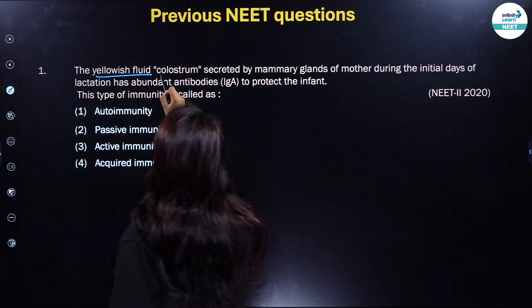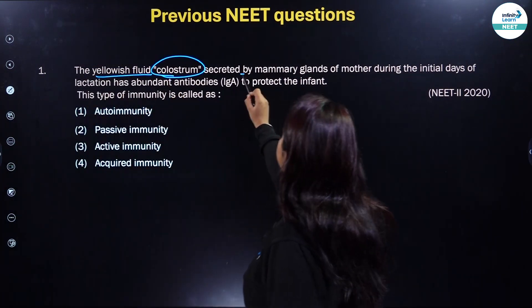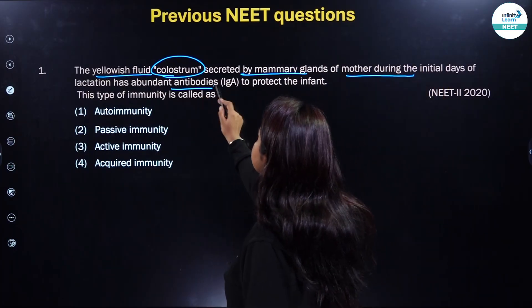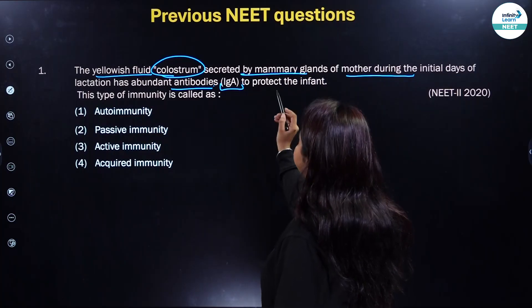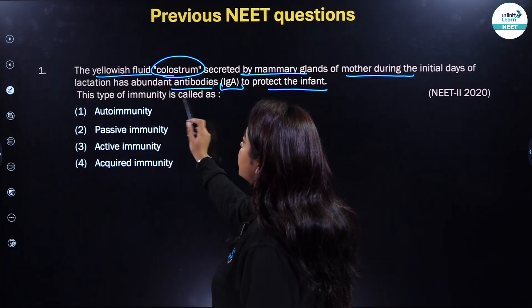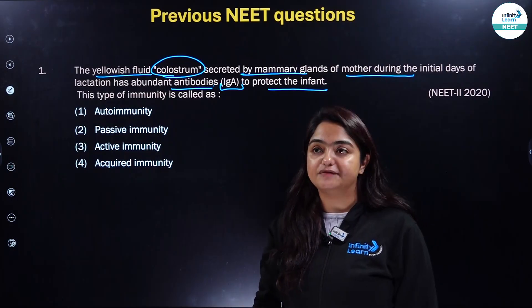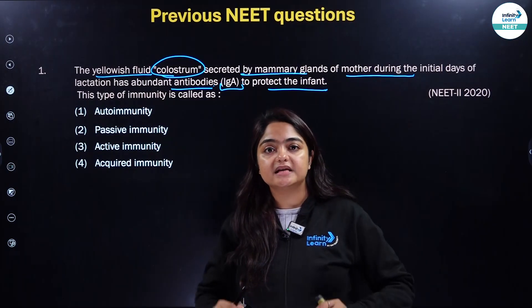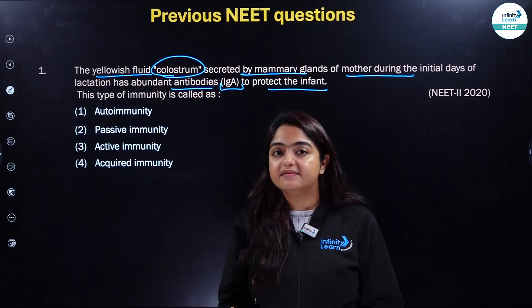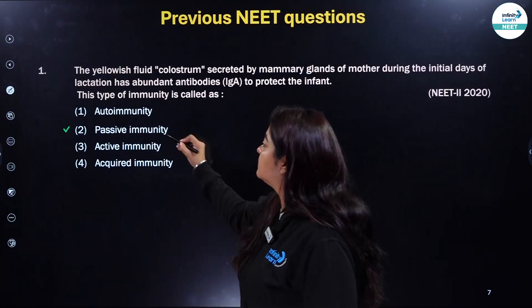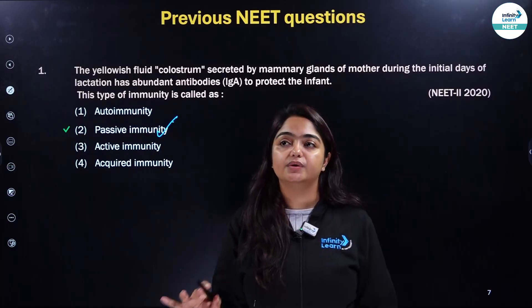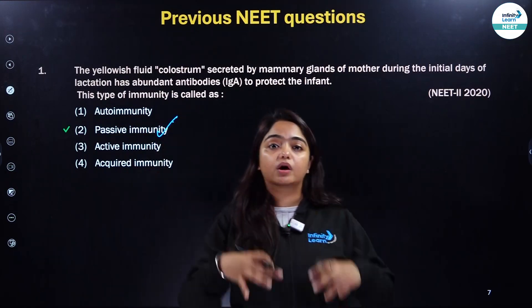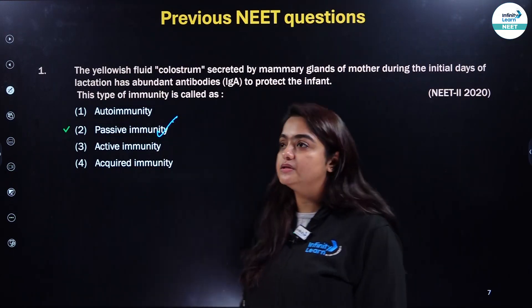The yellowish fluid known as colostrum, secreted by mammary glands of the mother during the initial days of lactation, has abundant antibodies — IgA — to protect the infant. This type of immunity is called passive immunity, because whenever ready-made antibodies or preformed antibodies are given to a person or even an infant, that type of immunity is considered passive immunity. Active immunity is the immunity where the antibodies are being prepared on their own in the person's body.